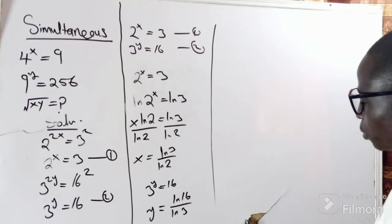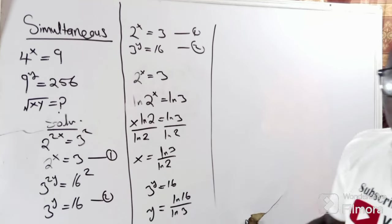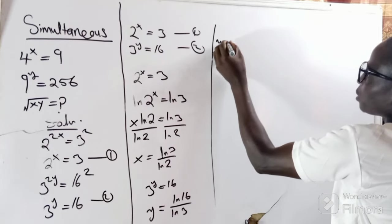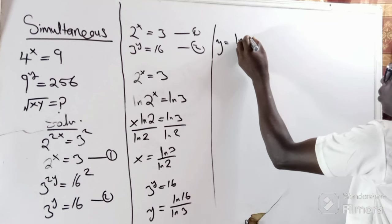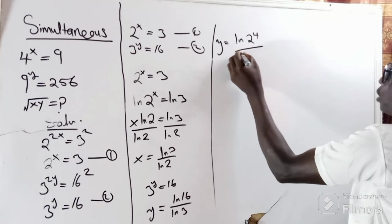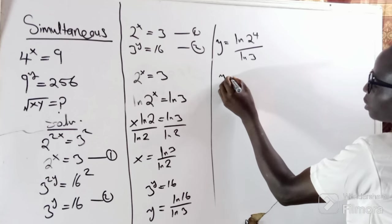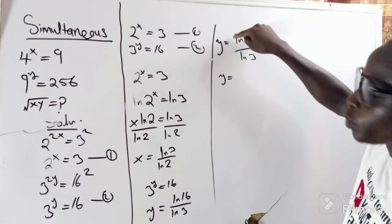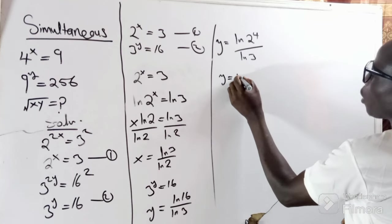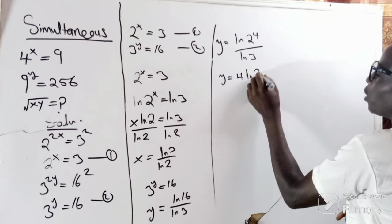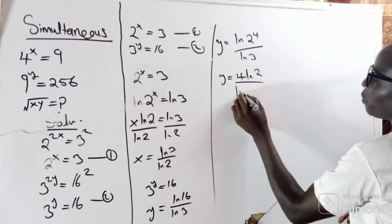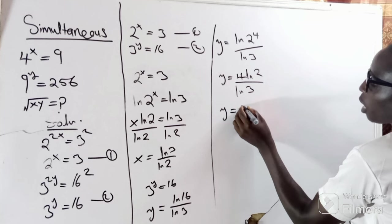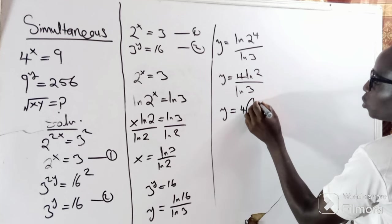Now 16 is the same as 2 to the power of 4, so y equals ln(2^4) divided by ln(3). By the logarithm power rule, the 4 comes down to multiply ln(2), giving y equals 4·ln(2) divided by ln(3).